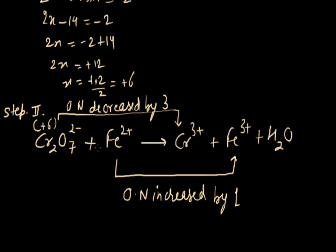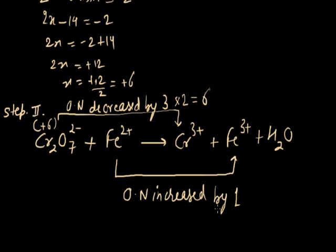In the dichromate ion, there are 2 chromium atoms present. So for 1 chromium atom the decrease is 3, but for 2 chromium atoms it will be 3 multiplied by 2, equal to 6. So for 1 dichromate ion, there is a decrease of 6 in oxidation number. For iron, there is only 1 iron atom present, so the oxidation number increases by 1.